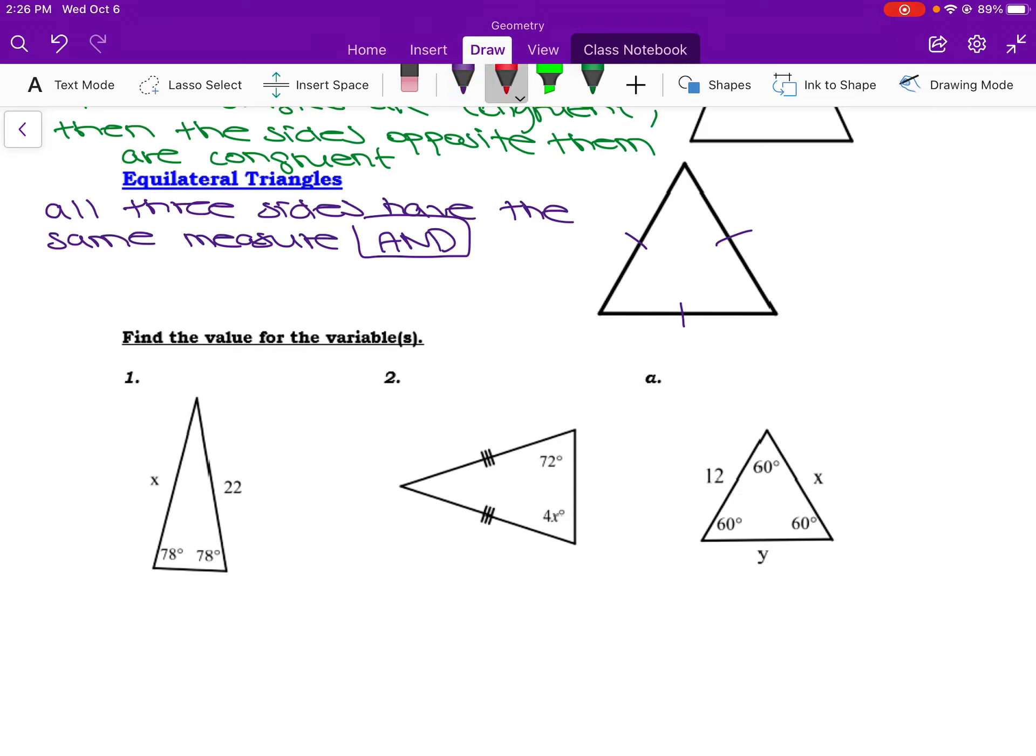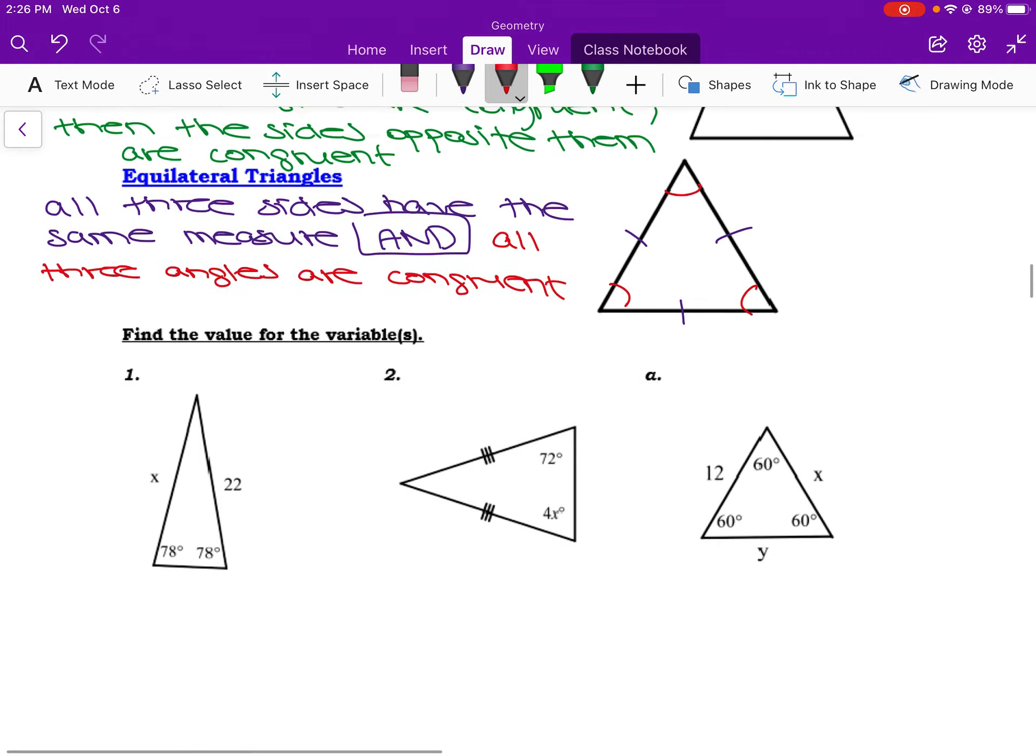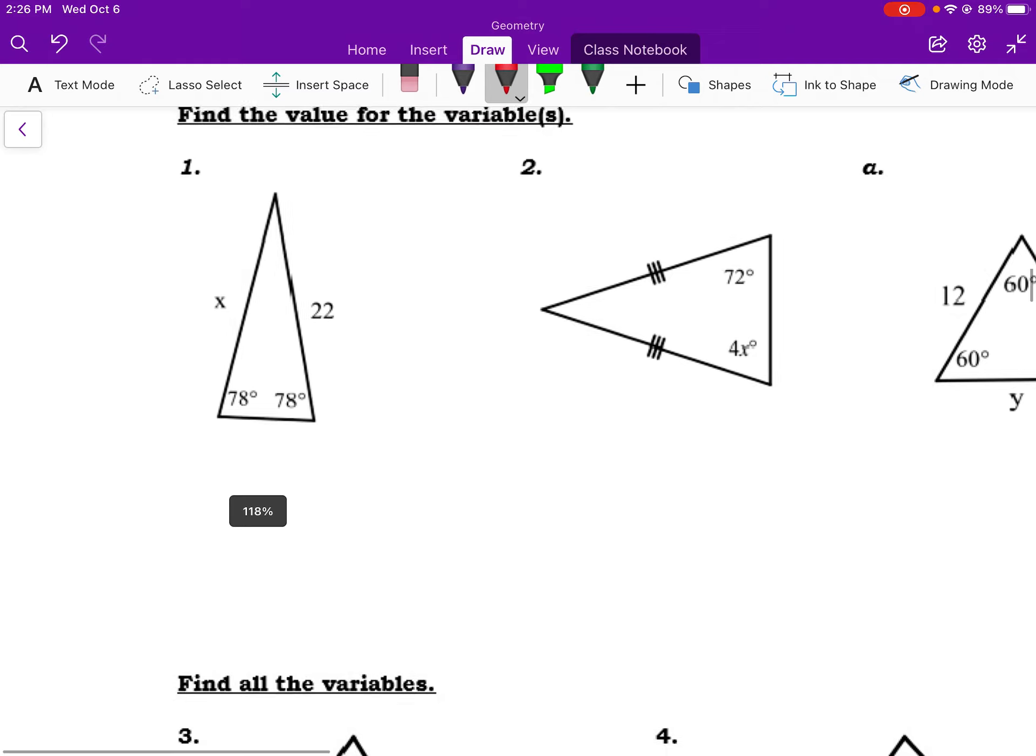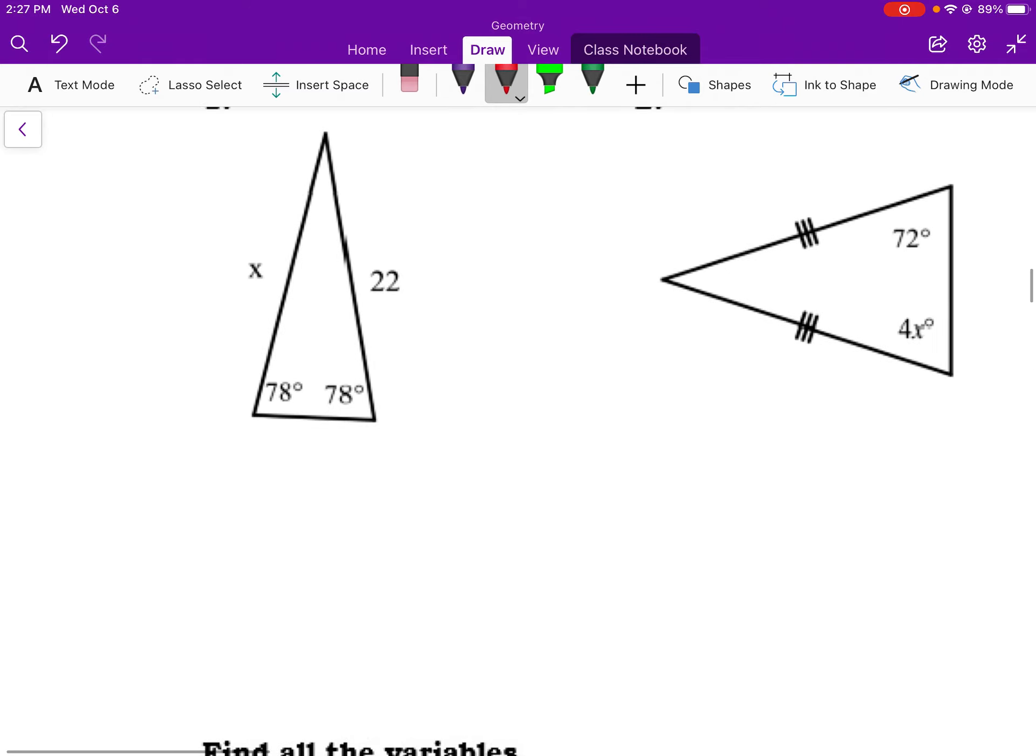And this special property of equilateral triangles and all of the angles are the same measure. So we say all three angles are congruent. So it's like all of the sides, all three sides match, all three angles match. So we're going to use this information to solve for some unknowns.